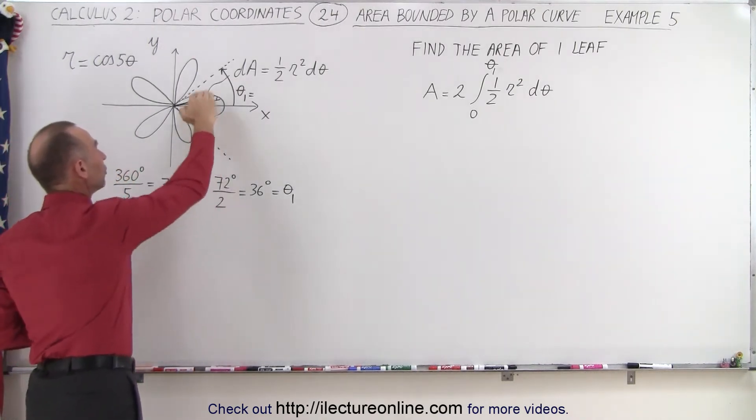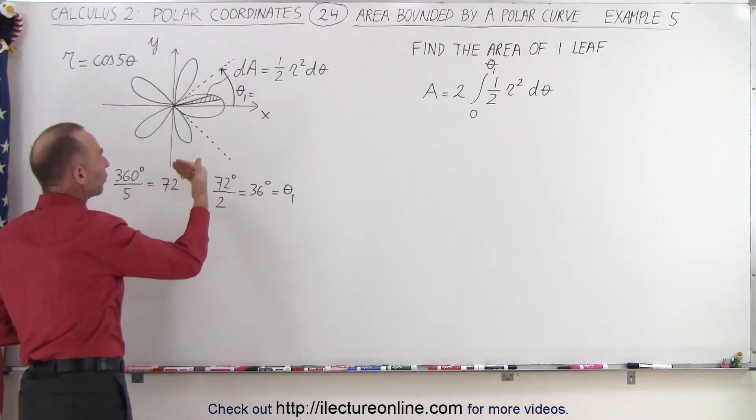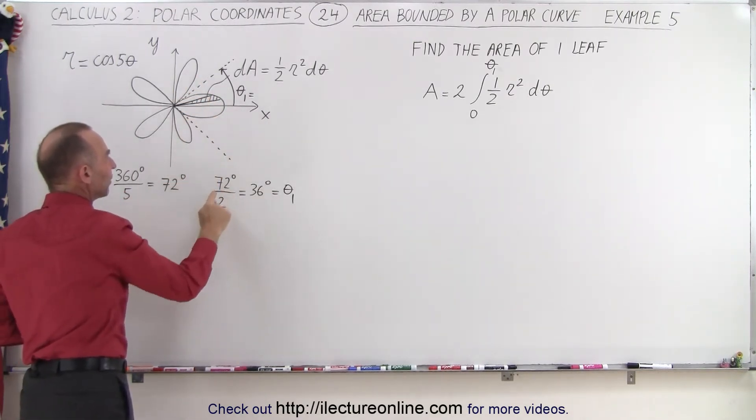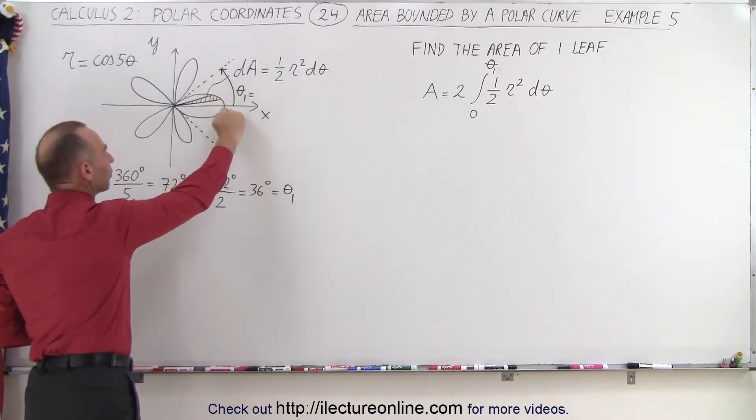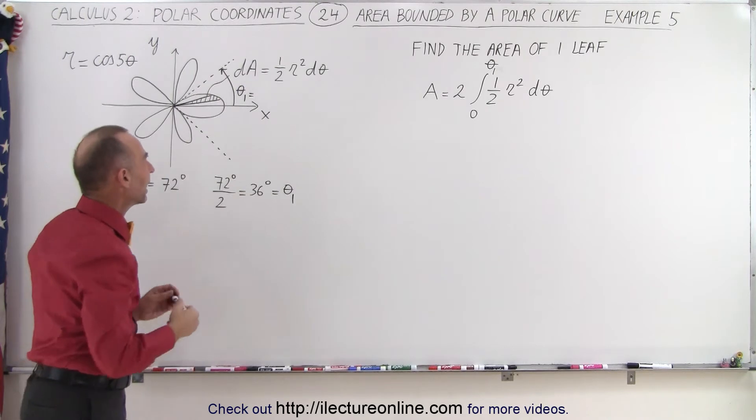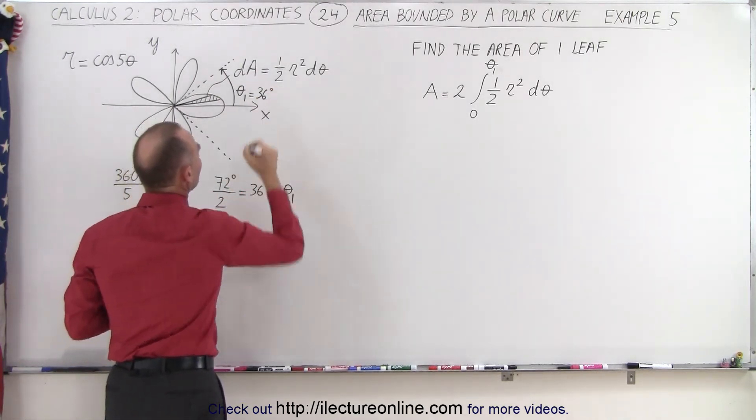That means from one end to the other end of the leaf. So if we only want to do half a leaf, we divide 72 by 2, we get 36, and so that would be the angle from zero to 36 degrees, being theta sub 1.